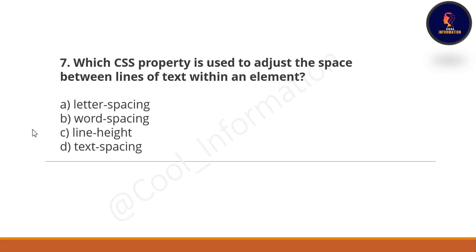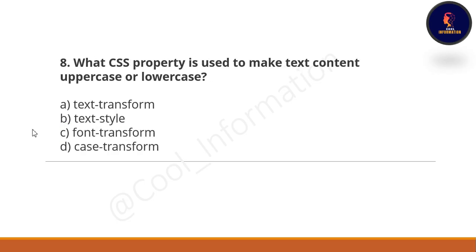Question 7: Which CSS property is used to adjust the space between lines of text within an element? Option A: letter-spacing. Option B: word-spacing. Option C: line-height. Option D: text-spacing. The correct option is option C, which is line-height.